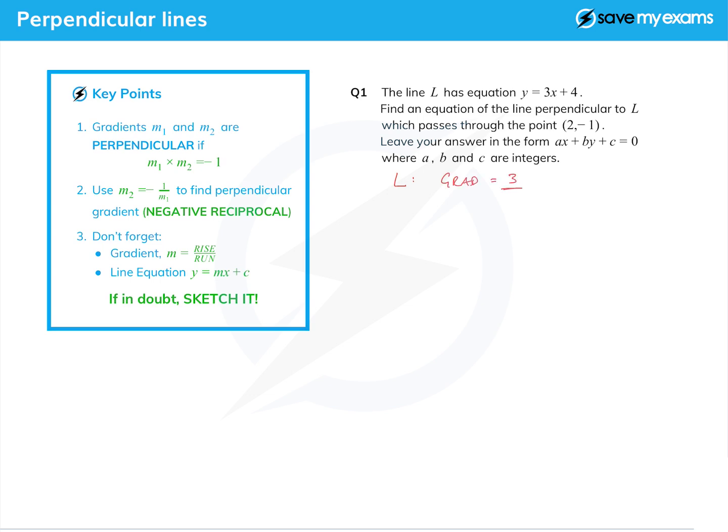The gradient of line L is 3, it's the m bit of the equation. So for the new line, the gradient will be, I'm going to call it m, and it's going to be minus a third. Why is it minus a third? Well because minus a third times 3 is minus 1.